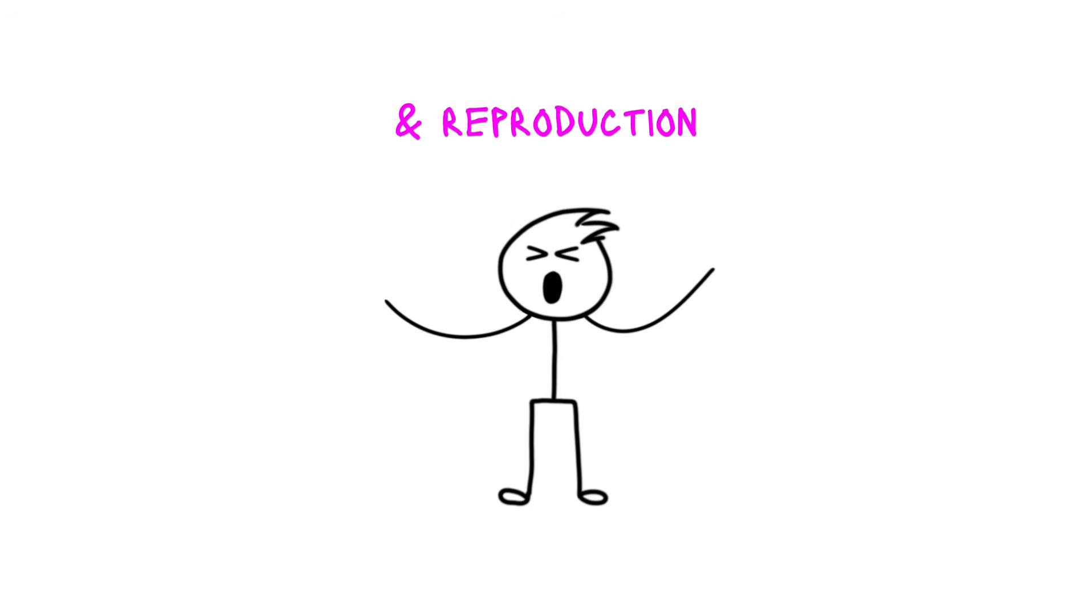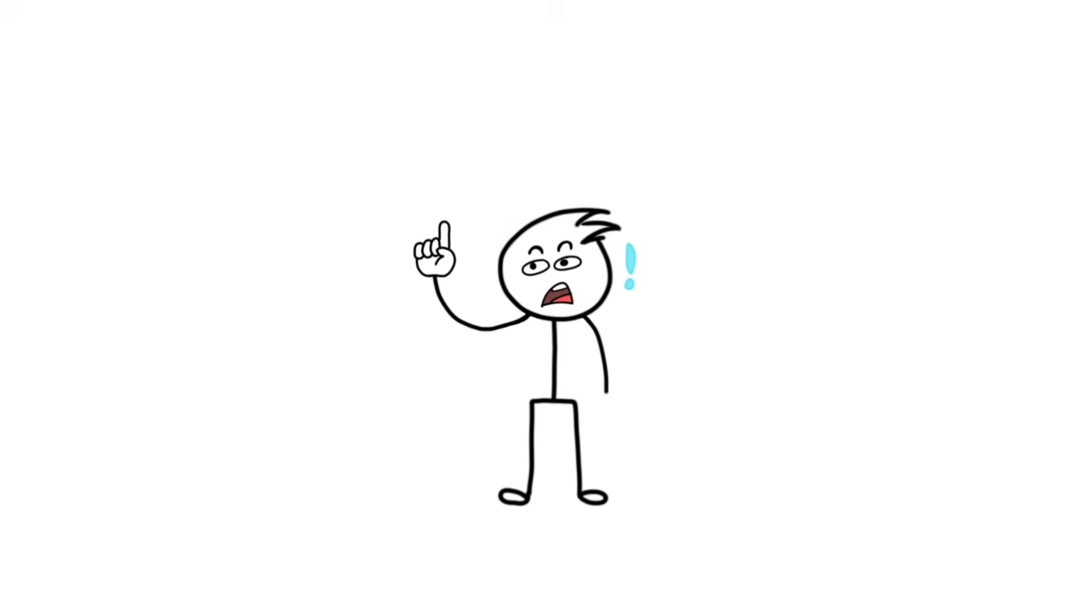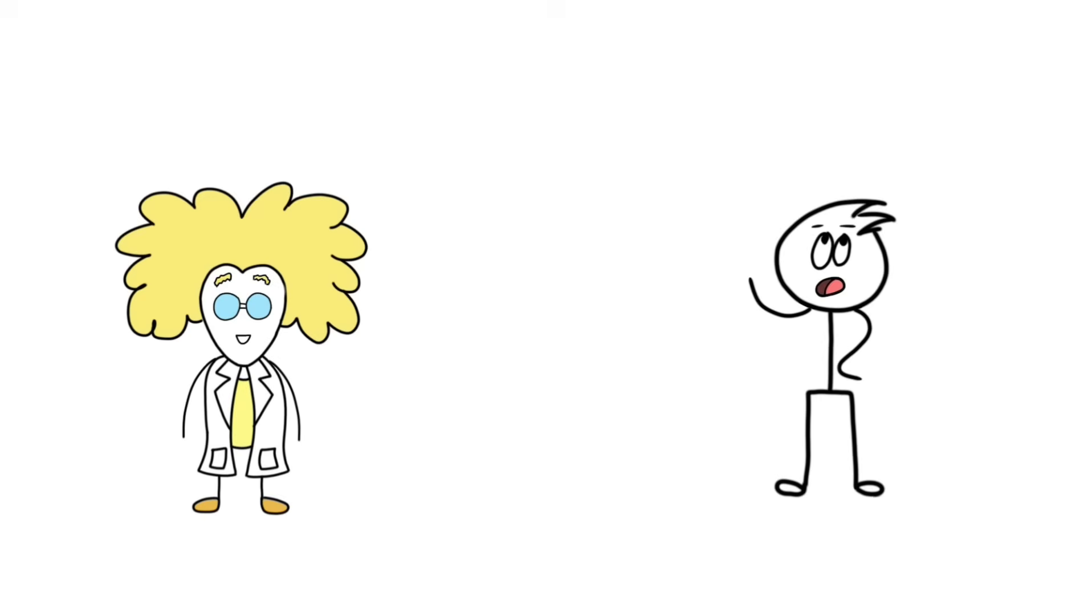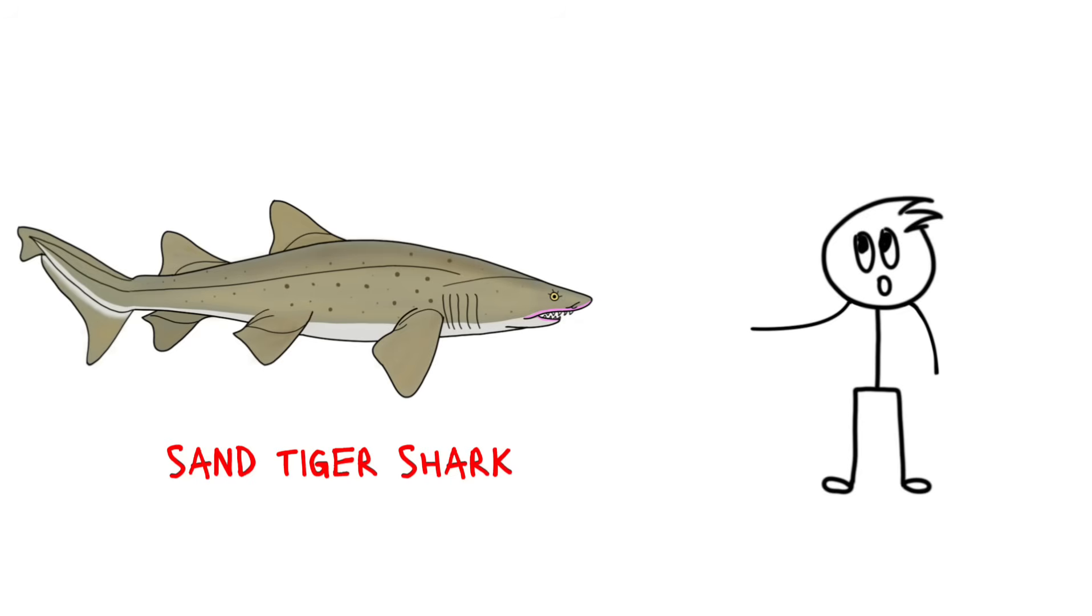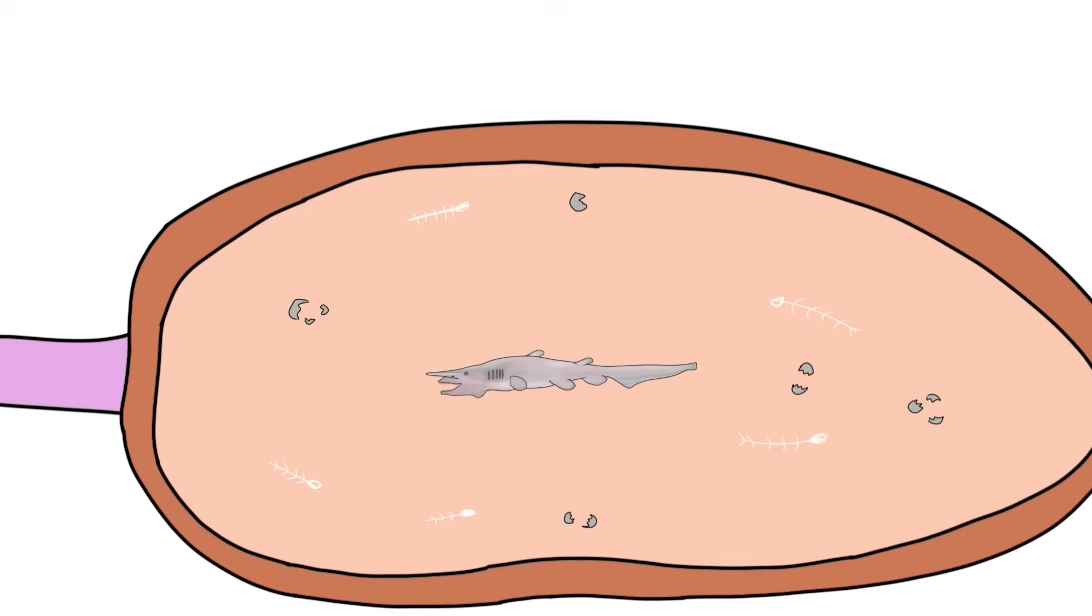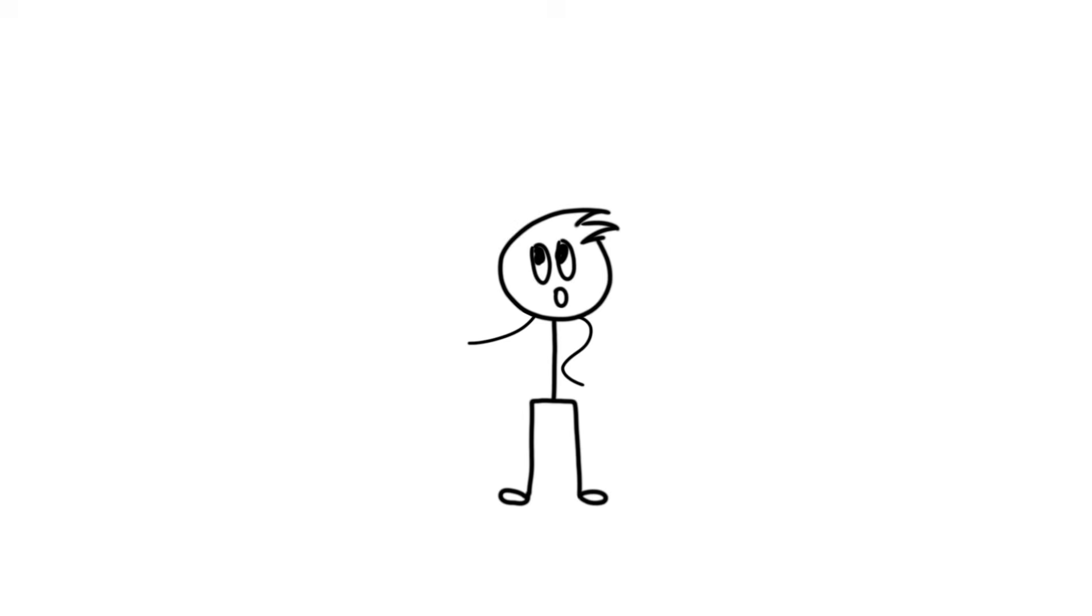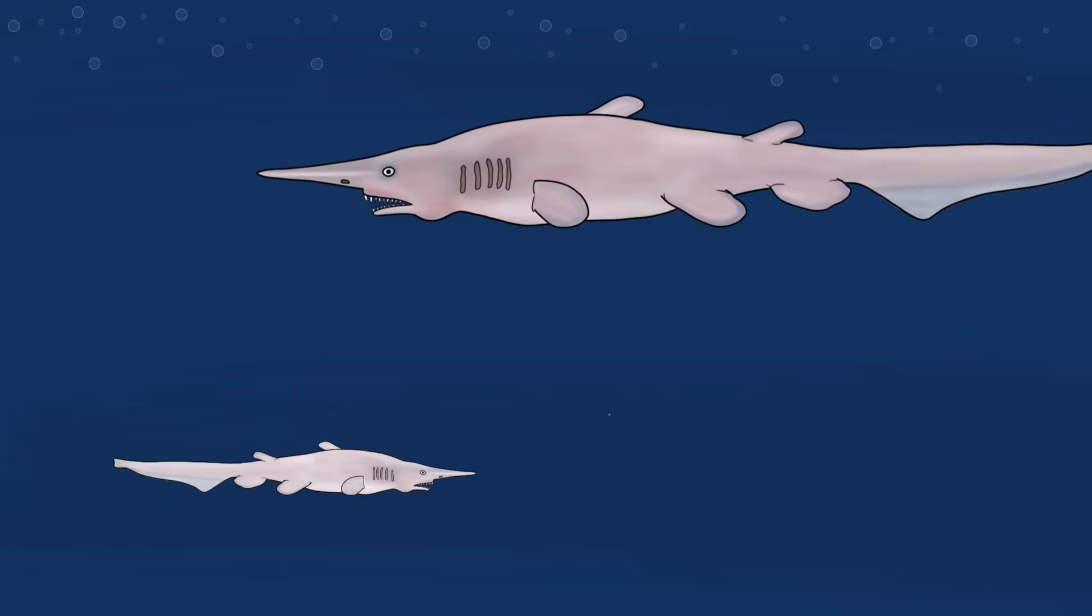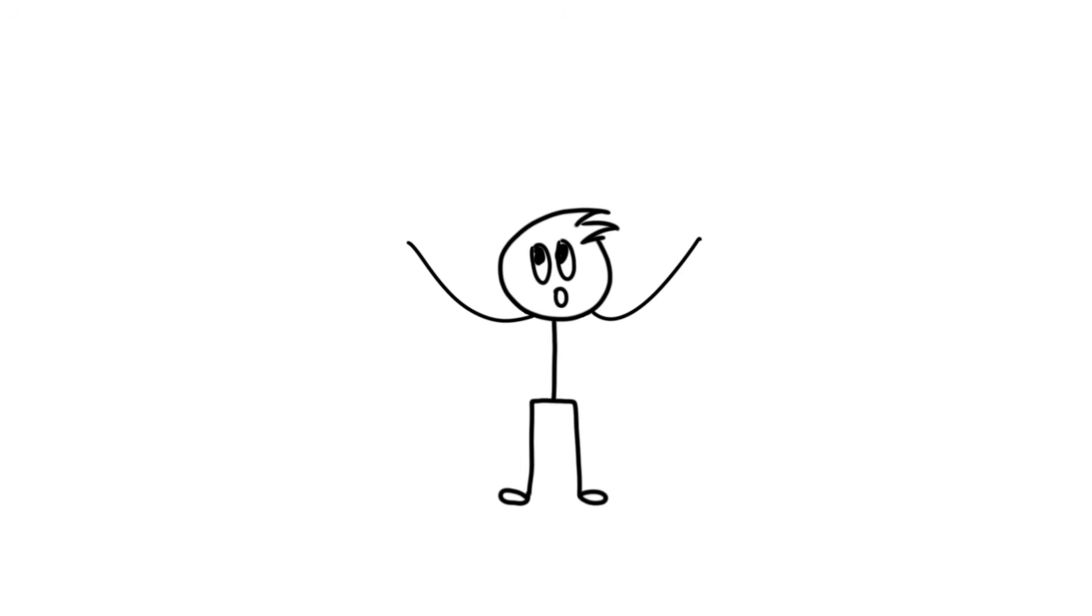Regarding the mating and reproduction part, scientists have never seen pregnant goblin shark. But as scientists, they have to say something as they won't say we know nothing. So, they say that goblin sharks give birth kind of like sand tiger shark, where the strongest kid eats all its siblings inside the womb. When the kid is born, it's ready to live its life of around 50 years as a failed chimera experiment. And the cycle continues.